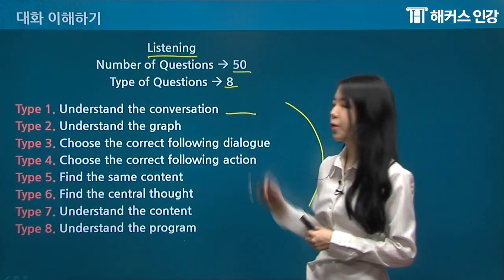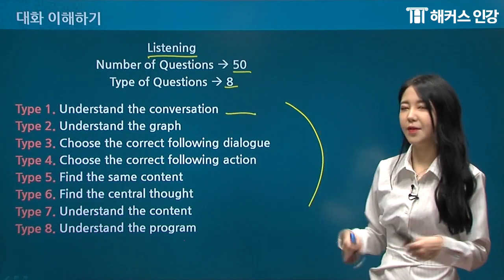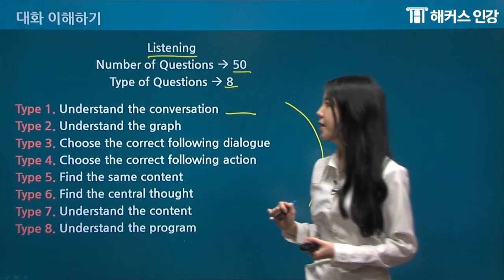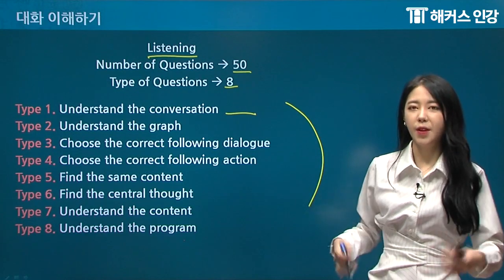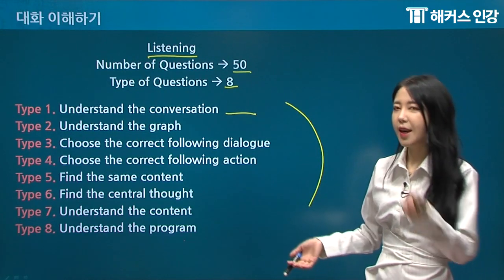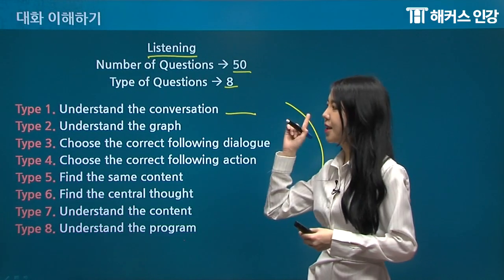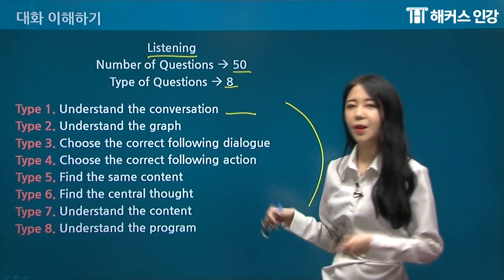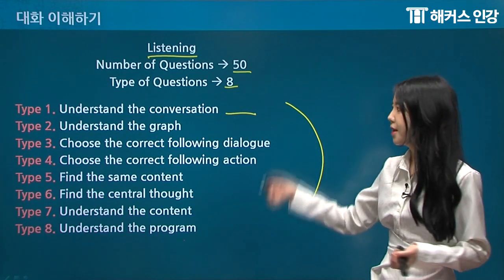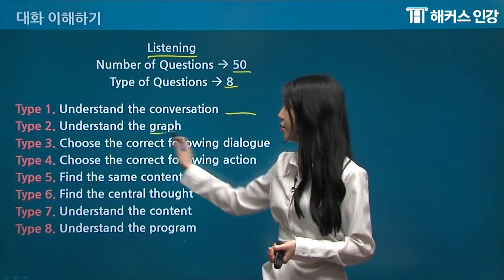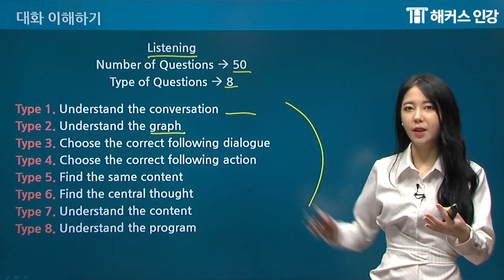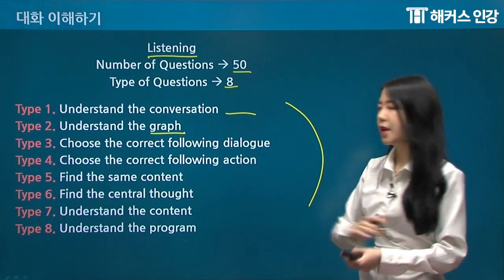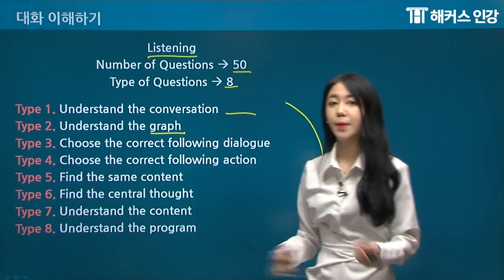Today we're going to go over type one: they're going to give you a picture, and you're going to listen to a dialogue and choose what that conversation is about. Type two is to understand the graph — they're going to give you a graph, make you listen to a soundtrack, and you're going to choose the graph that best matches it.